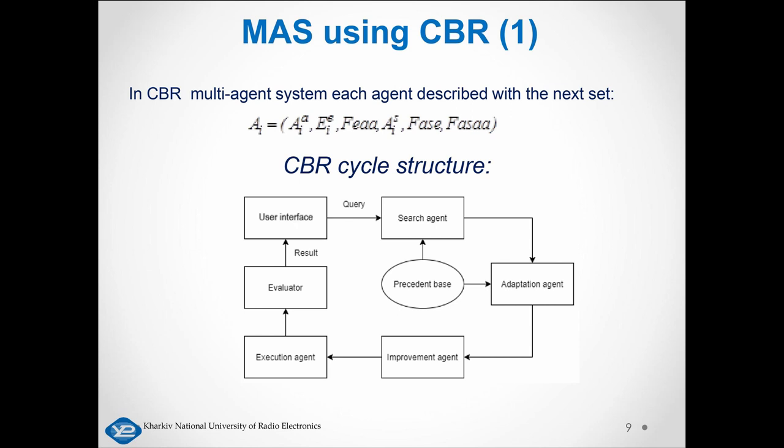In the case-based reasoning multi-agent system shown on slide 9, each agent is described by a corresponding set. The main agents are: Search Agent, Adaptation Agent, Approvement Agent, Execution Agent, Evaluator, User Interface Agent, Decision Making Agent, Report Agent, and Database Agent.